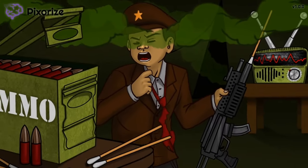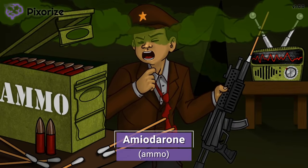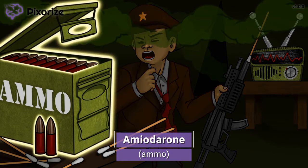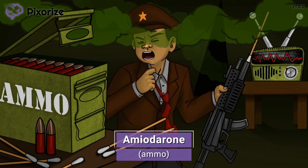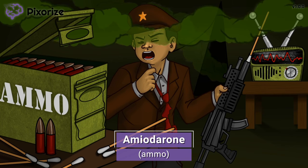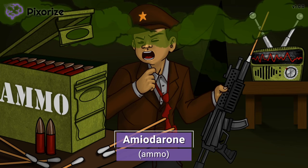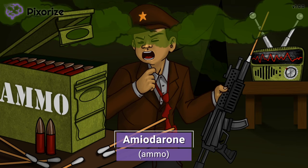We're under attack! This soldier just got back to base and is reloading his gun with ammo before heading out to the front lines. Ammo is our symbol for the drug amiodarone, because the word ammo sounds a lot like amiodarone. In the hospital, you'll probably hear amiodarone called just amio for short. Ammo, amio, amiodarone — easy, right?